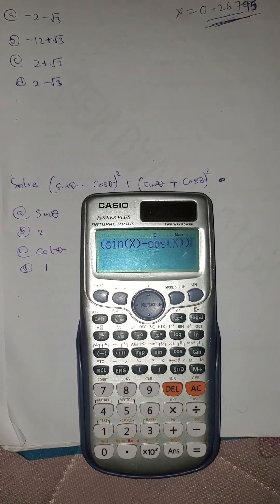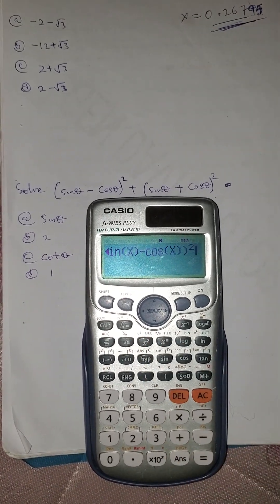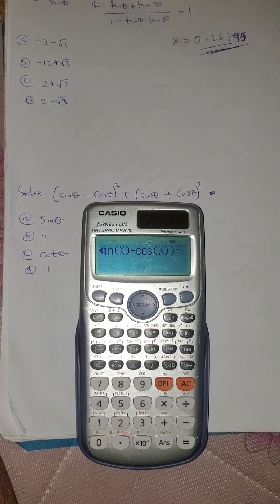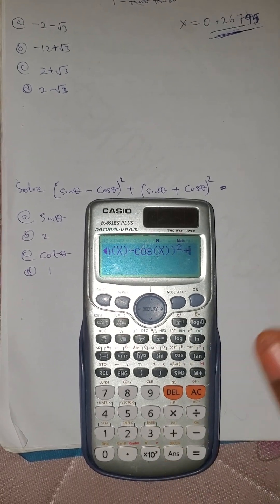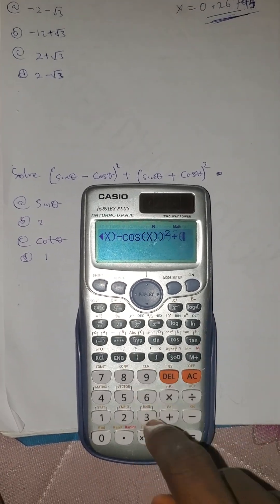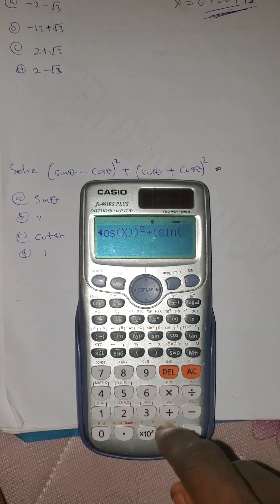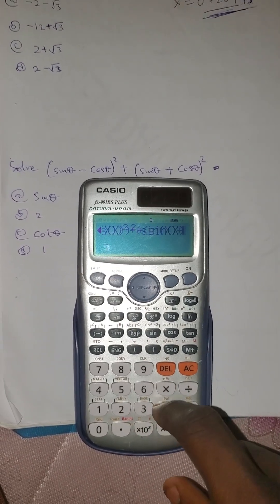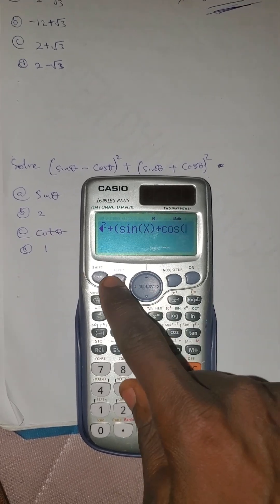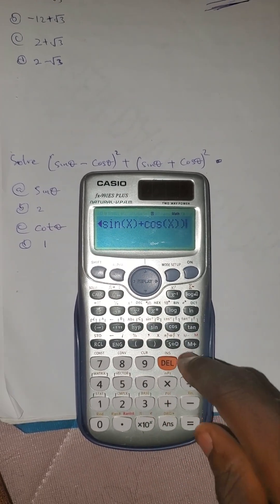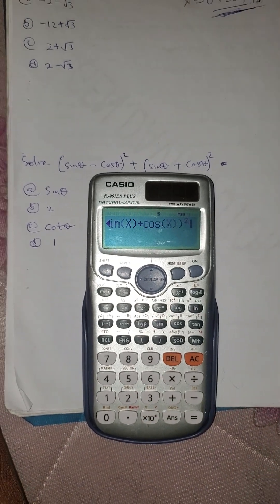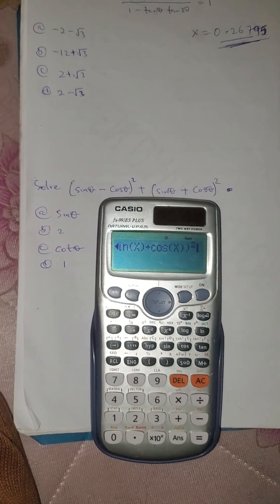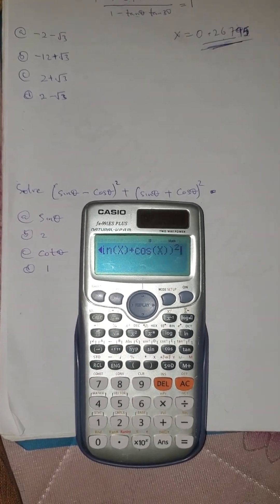I substituted my theta for x. Sine x minus cos x, close the bracket, close the general bracket, then square. Then plus the other side: into bracket, sine x plus cos x, close the bracket, close the general bracket, press square. I've entered all the question, now we'll just solve.